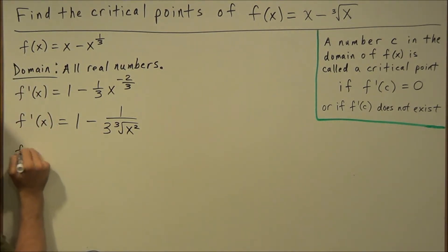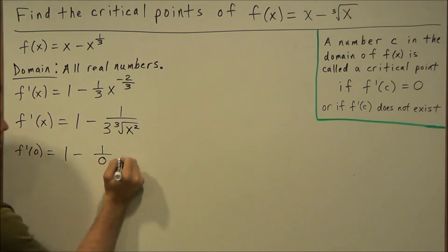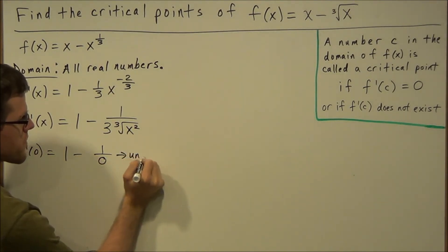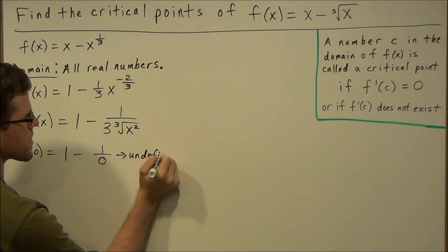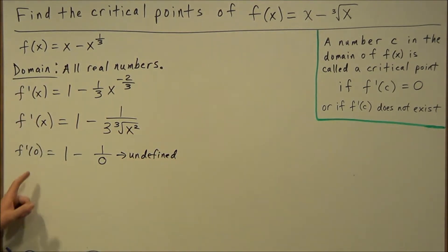If we look at f prime of zero, that would give us 1 minus 1 over, and the cube root of zero squared is zero, which will send the zero to the denominator. Since this expression is undefined, this tells us that we found one of the critical values. x equals zero is a critical point.